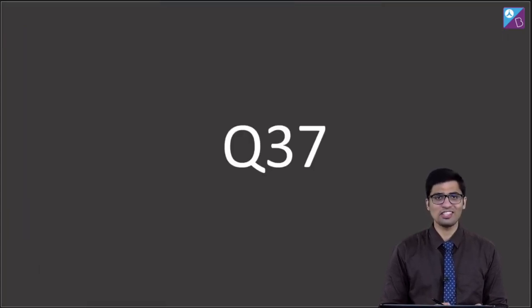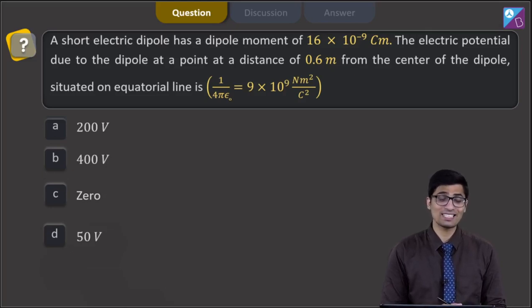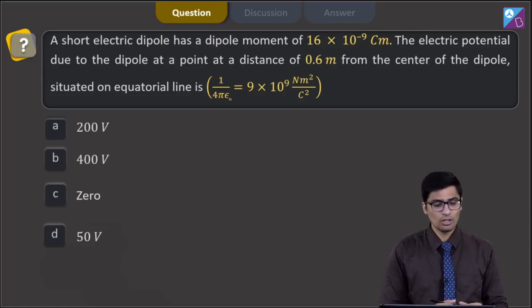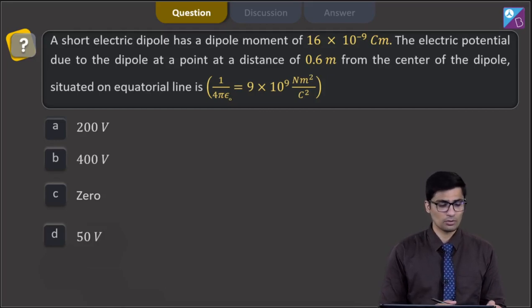Question 37. A short electric dipole has a dipole moment of 16 × 10⁻⁹ coulomb meters. The electric potential due to the dipole at a point at a distance of 0.6 meter from the center of the dipole situated on the equatorial line. 1/(4πε₀) = 9 × 10⁹ N·m²/C². The four options are 200 volt, 400 volt, 0, or 50 volt.